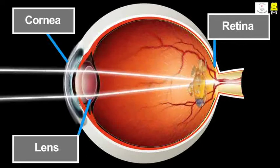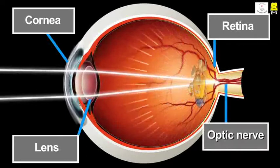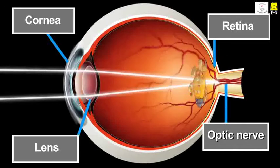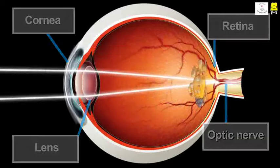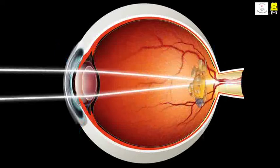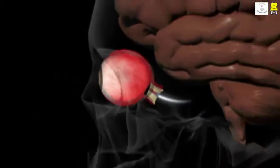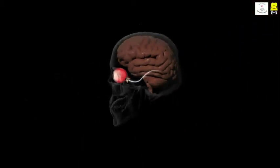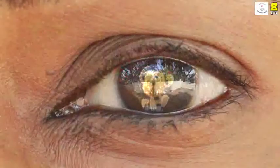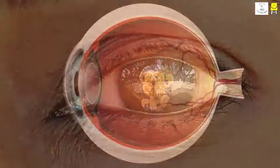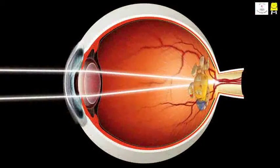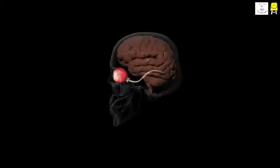The retina is connected to the brain through the optic nerve, which carries information about the image to the brain. When the messages reach our brain, they are decoded and we are able to identify the object. All this happens within a fraction of a second and we don't even realize it — isn't it wonderful!